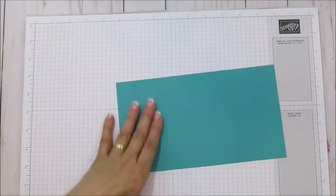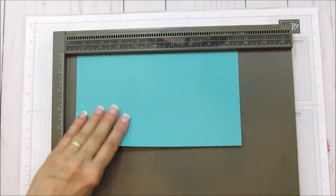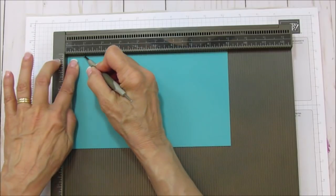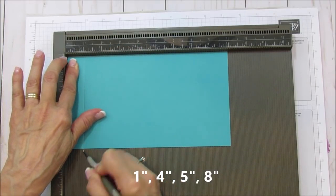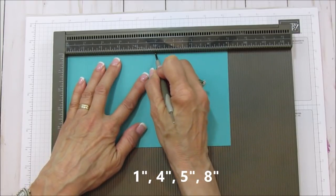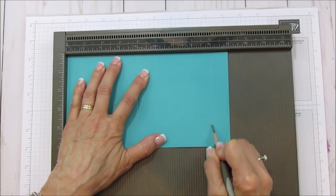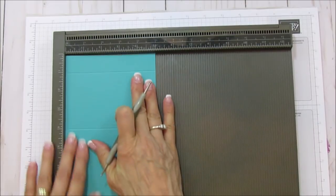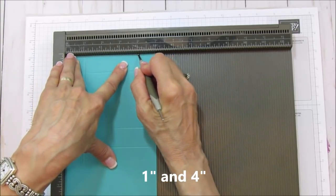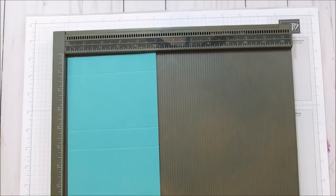Let's get scoring this piece. I'm going to use my Simply Scored. On the nine inch side we're going to score it at one, at four, five, and eight. Then we're going to turn it and score it at one inch on each side.